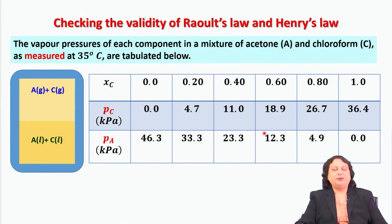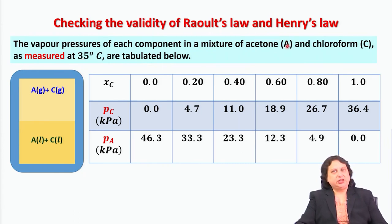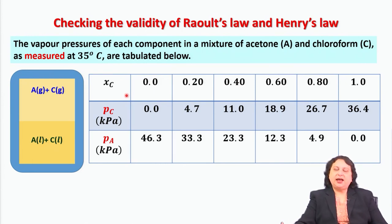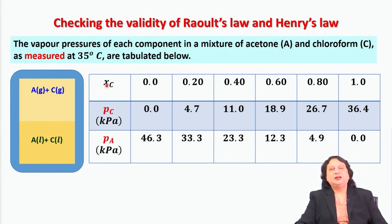The vapor pressures of each component in a mixture of acetone and chloroform are measured at 35 degrees centigrade and these vapor pressures are tabulated. I will use the notation that A stands for acetone and C stands for chloroform. At a given fixed temperature, the independent variable is the mole fraction of one of the components, and in this experiment they have used the mole fraction of chloroform, making 6 solutions.